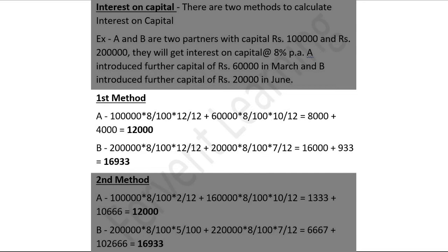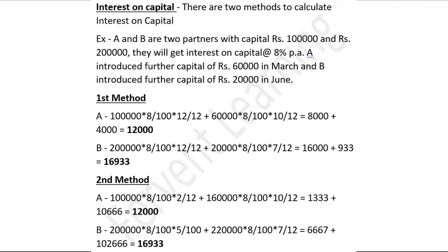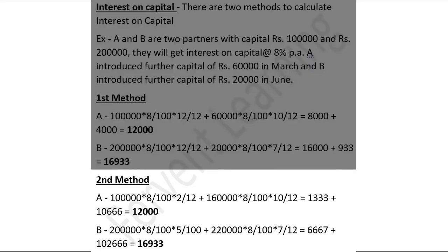So by the first method, interest on capital of A is twelve thousand and interest on capital of B is sixteen thousand nine hundred thirty-three. We will get the same answer by using the second method. Let's see — one lakh is his investment and the rate of interest is eight percent. We will consider that one lakh is used for two months, because after two months he introduced sixty thousand more. So in the first case we calculate interest on capital only for two months.